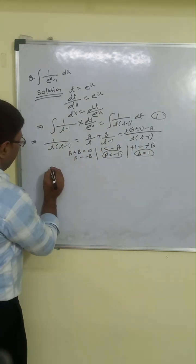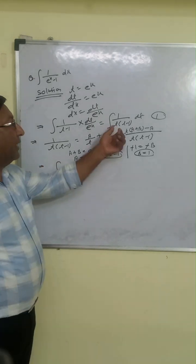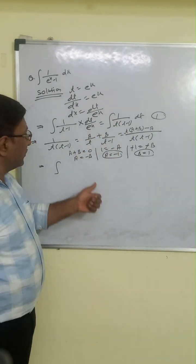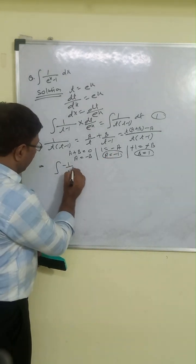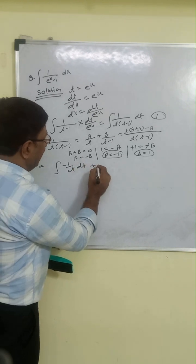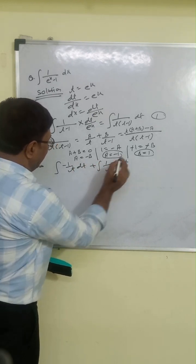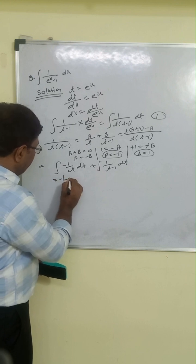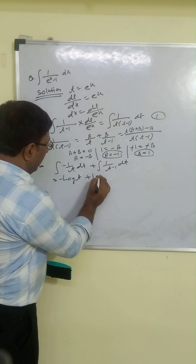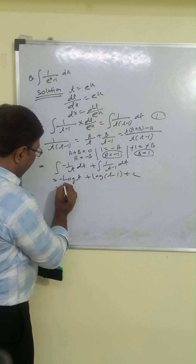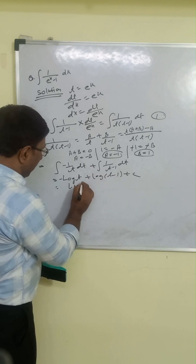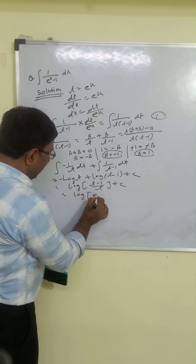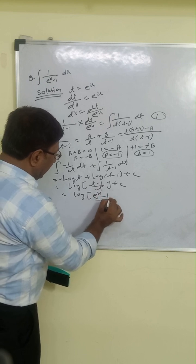From the first equation, integration of 1/(t(t-1)) with A equals minus 1 and B equals 1 gives: minus 1/t dt plus 1/(t-1) dt. Integration gives minus log(t) plus log(t-1) plus c, which equals log((t-1)/t) plus c. Putting back t equals eˣ, we get log((eˣ - 1)/eˣ) plus c. This is our correct answer.